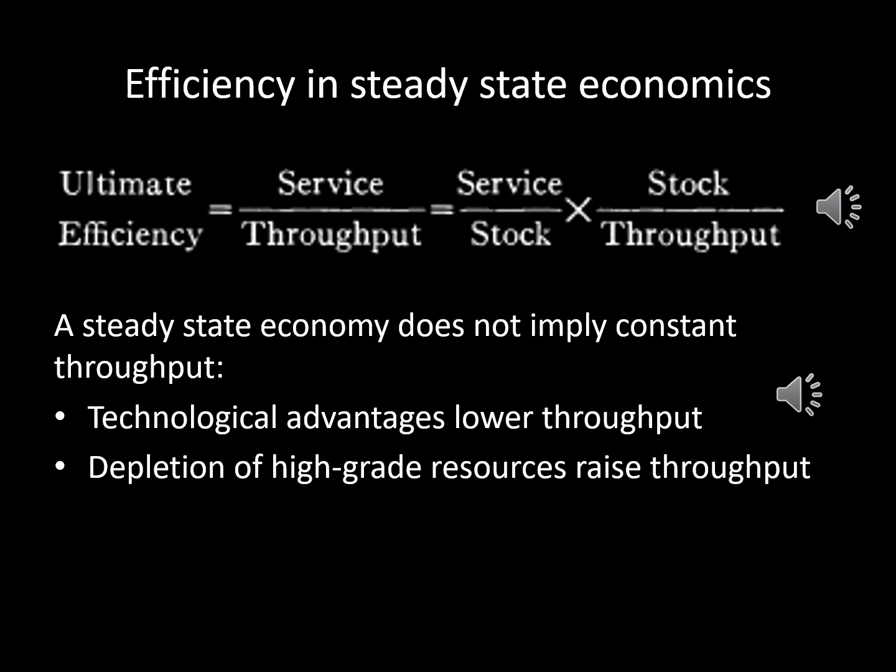For example, technological advance may save resources, while the gradual depletion of the highest-grade resources leads to a path of increasing throughput to maintain a certain steady state.